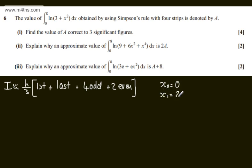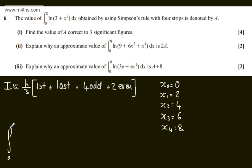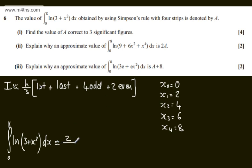x₁ will be equal to 2, x₂ will be equal to 4, x₃ will be equal to 6, and x₄ will be equal to 8. So the integral from 0 to 8 of the log of 3 plus x squared with respect to x, using Simpson's rule, will be approximately equal to h over 3, which is 2 over 3.